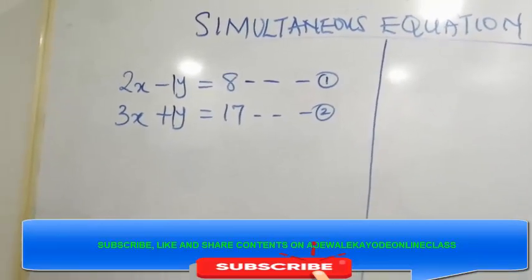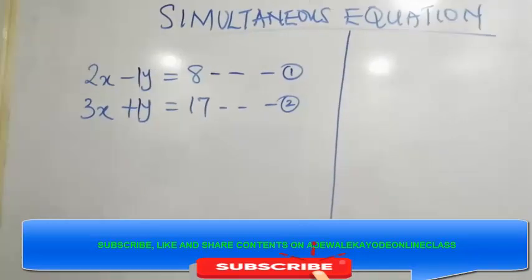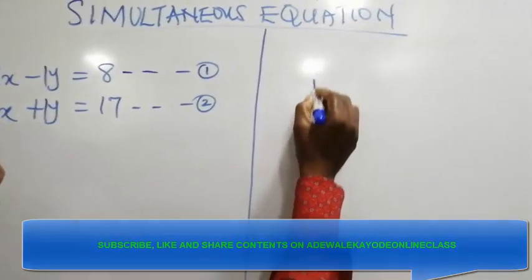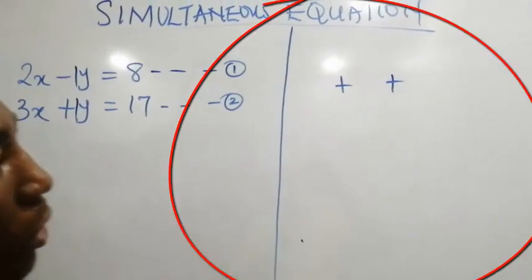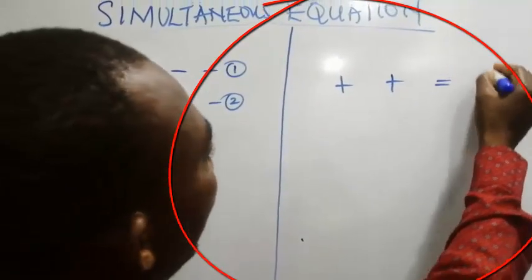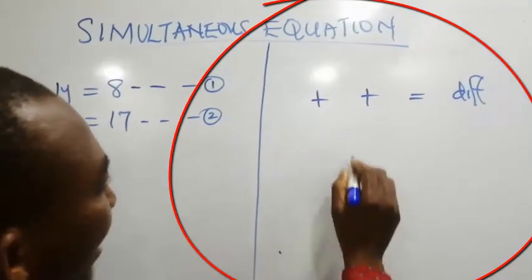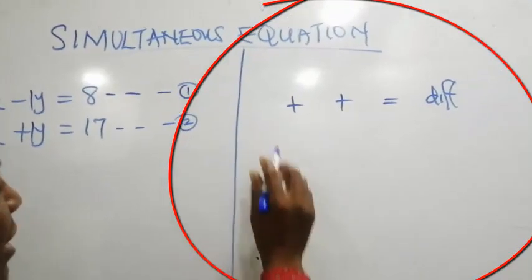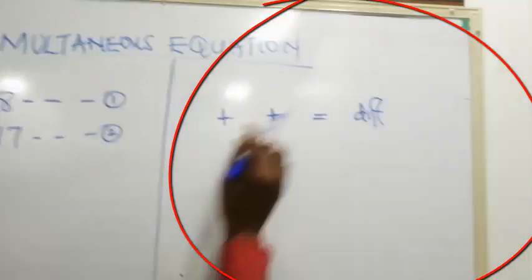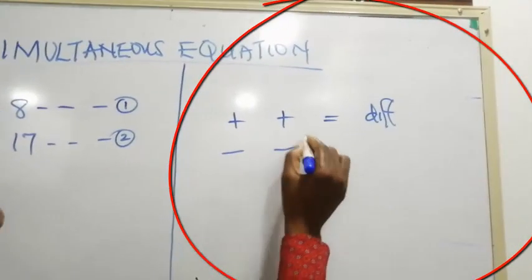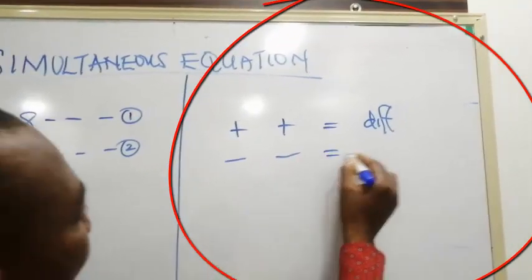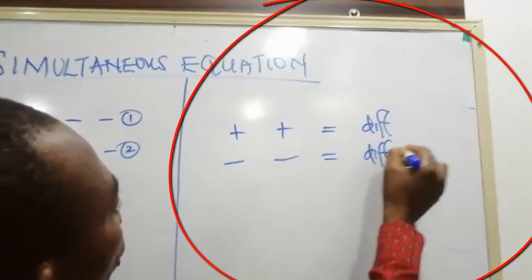the next thing is to check the sign before the coefficient. If the signs are different, you find the sum. If the signs are the same, you find the difference. For instance, if the sign is plus and plus, or minus and minus, you find the difference between the two equations.